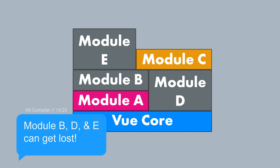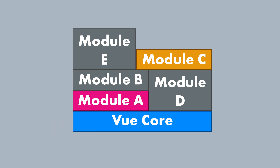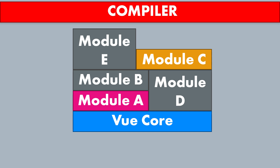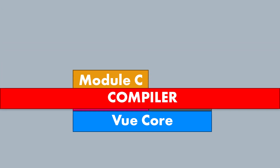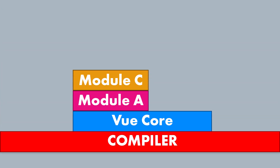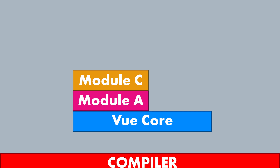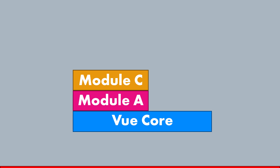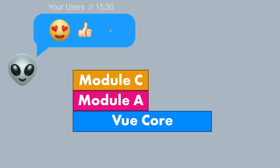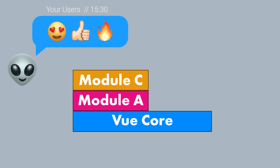As you can imagine, unless you're a massive and complicated application, you're likely not going to be utilising every single feature and piece of code that Vue 3 has to offer. So when you compile your project for production, all of the dead code is removed, leaving the slimmest version of your project possible. Smaller project size means faster page loads for your users.